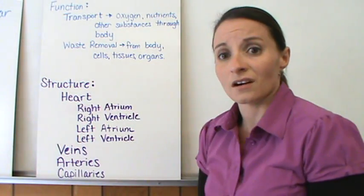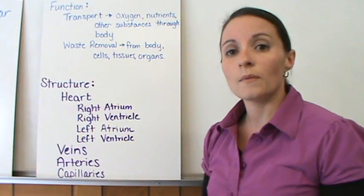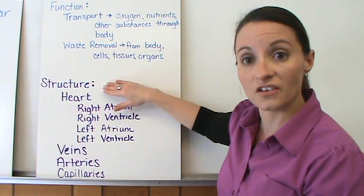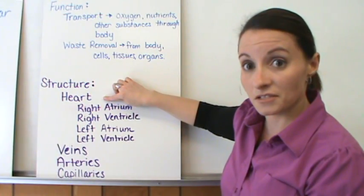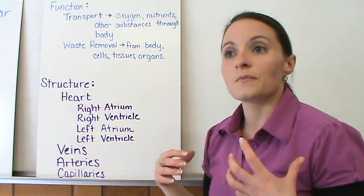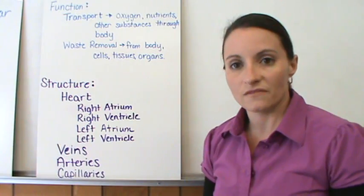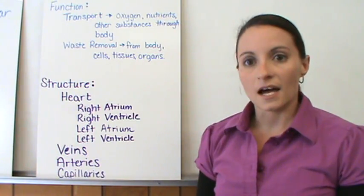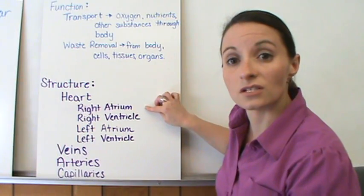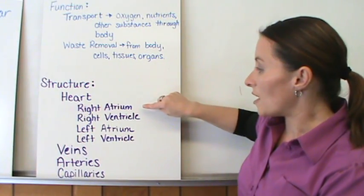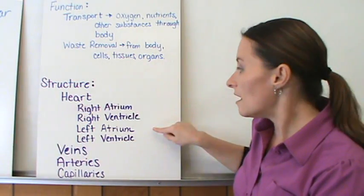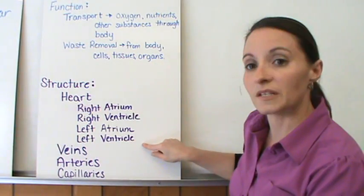The major structure of the cardiovascular system is your heart. Your heart pumps things throughout your body and is the piece that keeps the cardiovascular system moving. There are four major parts to the heart: the right atrium and the right ventricle, and the left atrium and the left ventricle.